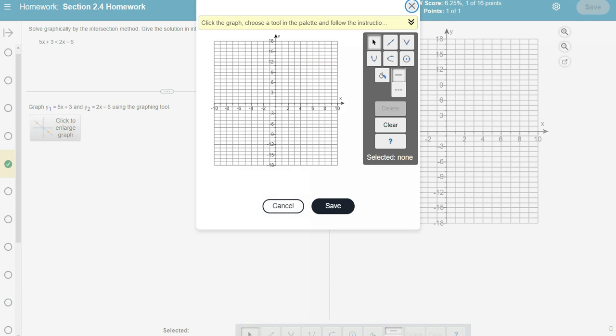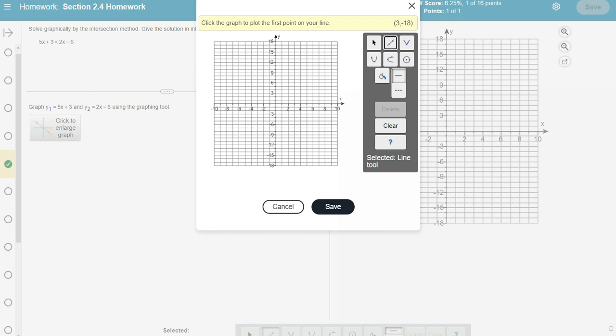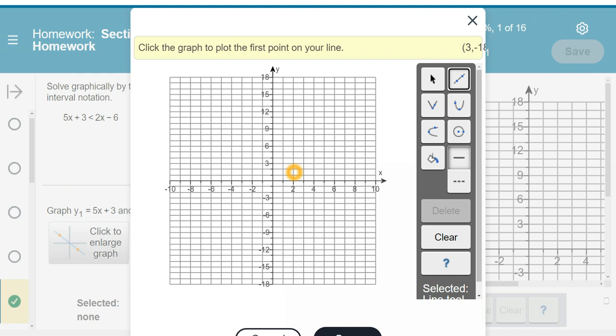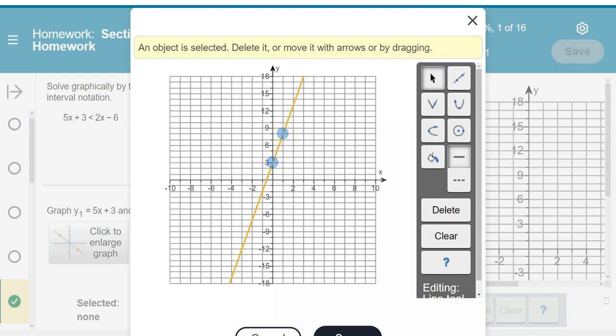You're going to click on the line tool right there. I need this to be bigger. So the 5x plus 3, the plus 3 is your y-intercept. So I'm going to click on that, and then your slope is this 5x, so 5 is 5 over 1. So I'm going to go up 1, 2, 3, 4, 5, and over 1, and lock it in place.